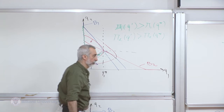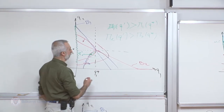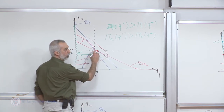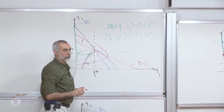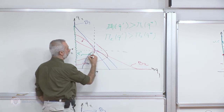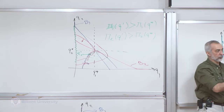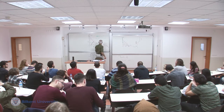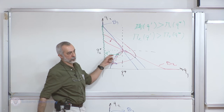Are all the points that Pareto dominate the Nash solution themselves Pareto efficient? The way to decide is: take a point, draw the indifference curves, and unless they are tangent, the point will not be Pareto efficient. Not all points are points of tangency of indifference curves.